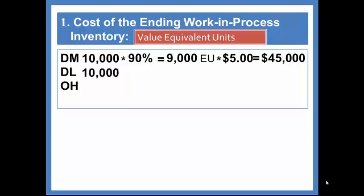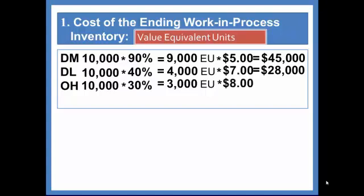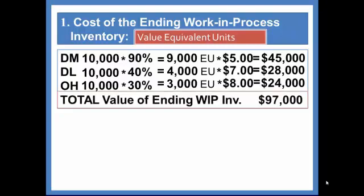For labor, those same 10,000 units were 40% complete, giving us 4,000 equivalent units. The labor cost per equivalent unit was computed to be $7, so those 10,000 units have $28,000 worth of labor assigned to them. For overhead, the 10,000 units were only 30% complete, translating to 3,000 equivalent units. The cost per equivalent unit for overhead is $8, so the overhead cost is $24,000. Adding direct material, direct labor, and overhead, the total value of the ending work in process is $97,000.